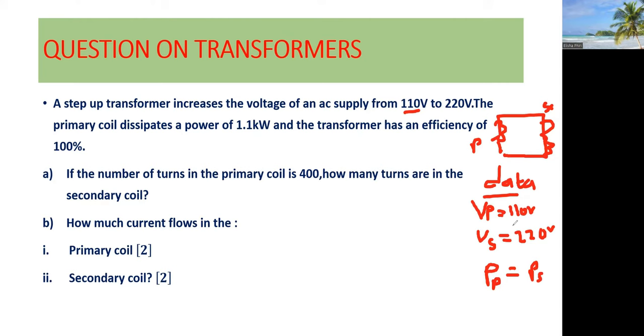So now with this data in place, we can move on and check out what we need to determine. So the primary coil dissipates 1.1 kilowatt. We can indicate that primary power is equal to 1.1 kilowatt. Now what you need to know is kilo equals to 1,000. So we can simply multiply by 1,000. Which will give us 1,100 watts. So primary power is equal to 1,100 watts.